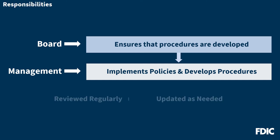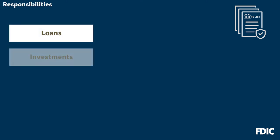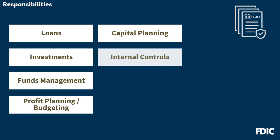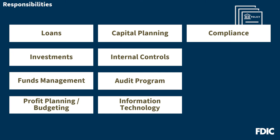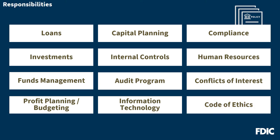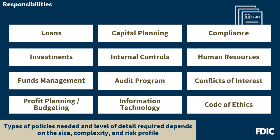Effective boards review policies regularly and update them as needed, such as when the board's risk tolerance or the bank's condition changes. Specific policies approved by the board can cover a variety of areas including loans, investments, funds management, profit, and capital planning. Key bank policies also address internal controls, the audit program, information technology, and compliance activities. Policies covering human resources, conflicts of interest, and a code of ethics are also important. The types of policies and level of detail required will depend on the size, complexity, and risk profile of the bank.